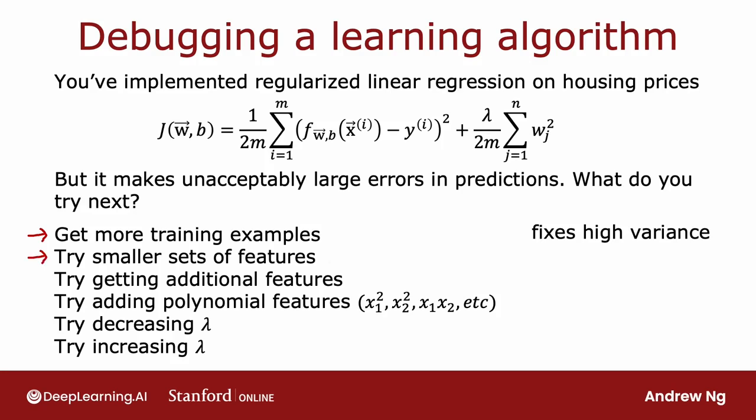How about trying a smaller set of features? Sometimes if your learning algorithm has too many features, then it gives the algorithm too much flexibility to fit very complicated models. This is a little bit like if you had x, x squared, x cubed, x to the fourth, x to the fifth, and so on. And if only you were to eliminate a few of these, then your model won't be so complex and won't have such high variance.